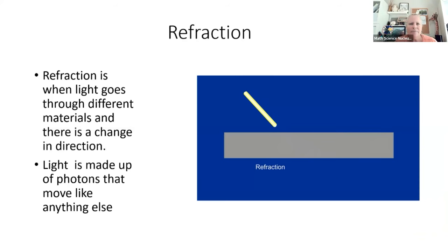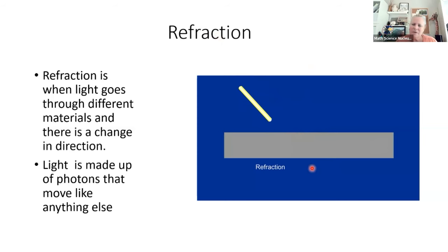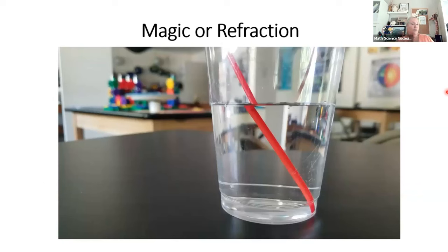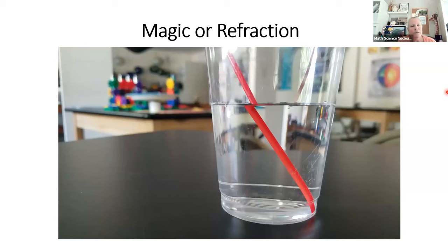Another thing light can do is refract — or refraction. With reflection, our light bounced back off a surface, but with refraction it goes through an object and doesn't go straight through. It starts to bend. When it bends going through different materials, that changes what the light looks like. Look at this picture — a glass of water with a straw. The straw appears split in two because light is traveling through both air and water, making a difference.